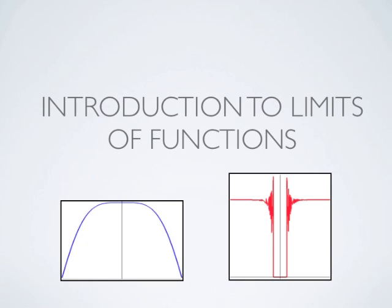Introduction to limits of functions. Here you see two views of the graph of a rather complicated function. The first one is the graph of this function on the interval from negative one to one and it looks nice and smooth. The second one, the red graph, has been obtained by zooming in very close to the origin. Here we see some erratic behavior and it seems that the function near the origin gets values near zero.